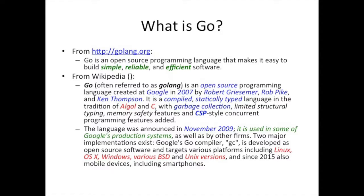Go is garbage collected. It's a modern programming language and they didn't want to force manual memory management on you the way C and C++ do. Memory management is one of the main sources of issues in those languages. So Go went the path of Java with garbage collection, but the big difference is in how Go manages garbage memory compared to Java, and Go is actually quite good at it.